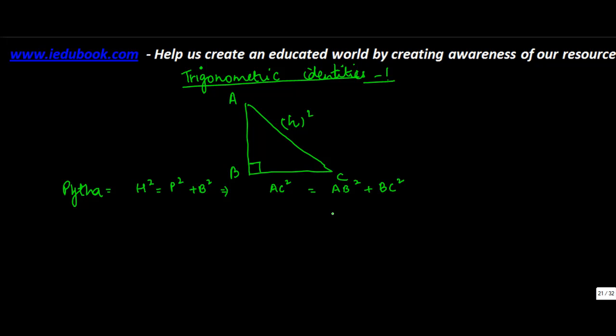Now let us divide both sides by AC². So once you do this, basically what you get is AC² divided by AC² is equal to AB² + BC² divided by AC².